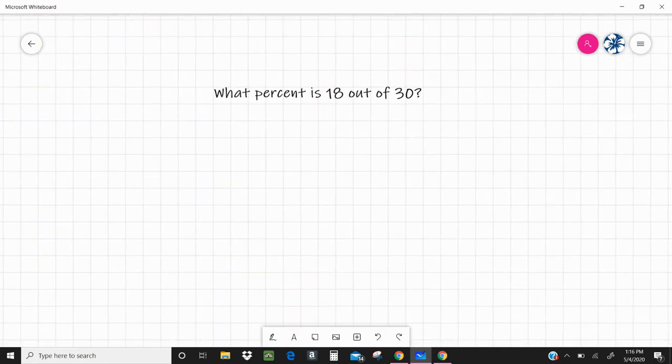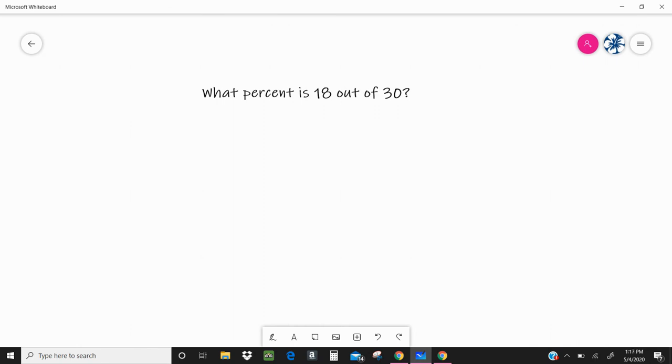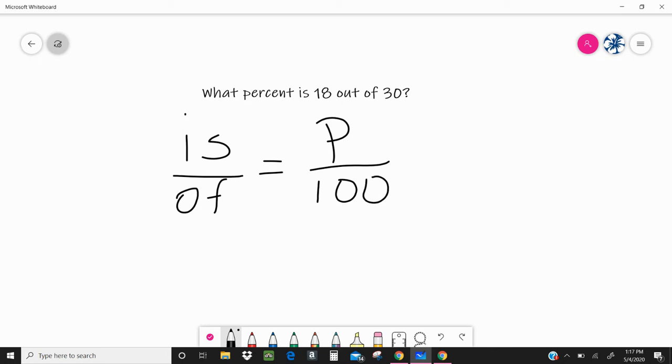Moving on to example two, what percent is 18 out of 30? Real fast, I'm going to set up my is and my of and my unknown percent and my 100 for always out of 100%. What is 18 out of 30? Here is my is, so I'm going to replace my is with 18. My of is 30, so I'm going to erase my of and replace it with 30. And I don't know what percent, so that's going to remain my P, my variable.